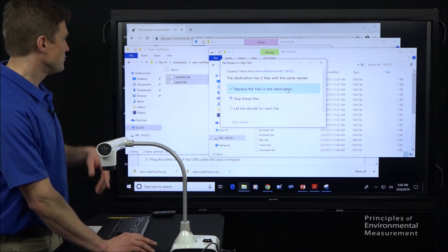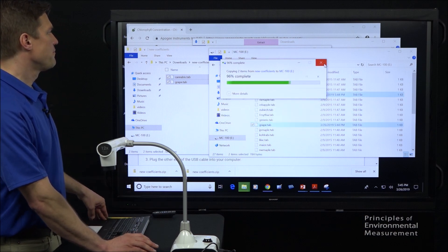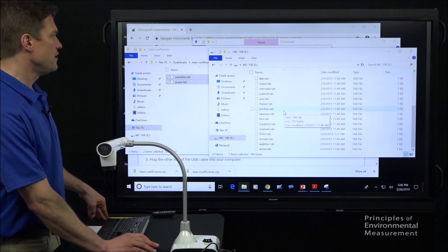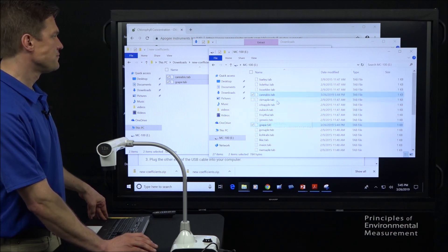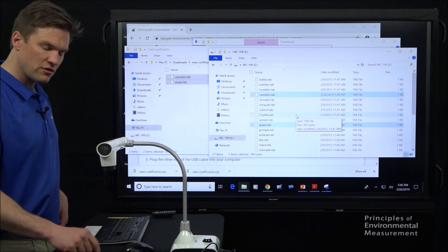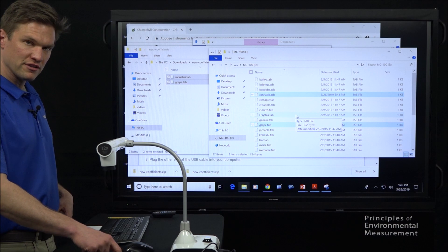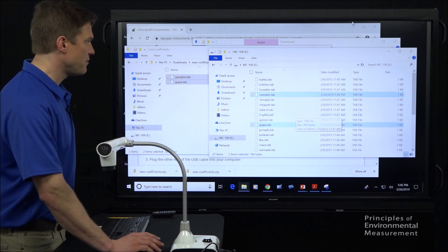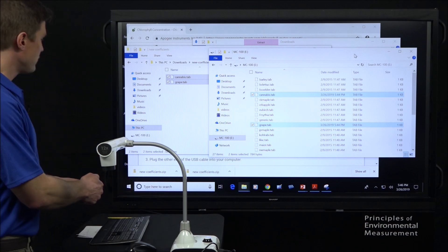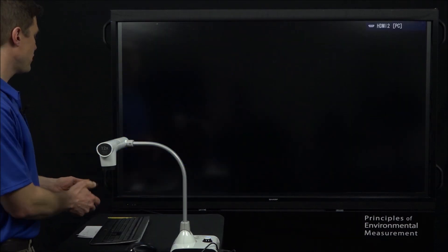Oh, I already had them in there, but we'll replace them. So now we have cannabis and we have grape in the meter. When you do this, they may show up down at the bottom. So you have to scroll all the way to the bottom of the list when we get to this step. But for the time being, they're in there. And so now I'm going to switch back over to our MC100 display.